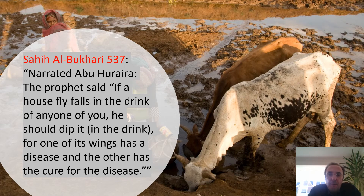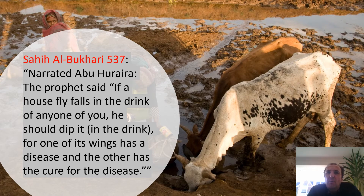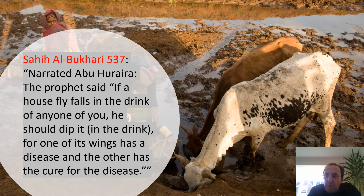In Sunan Ibn Majah 520, Jabir bin Abdullah said: "We came to a pond in which there was a carcass of a donkey, so we refrained from using the water until the messenger of Allah came to us and said, 'Water is not made impure by anything.' Then we drank from it, gave it to our animals to drink, and carried some with us." This is Muhammad's unimpressive knowledge of water sanitation, hygiene, and disease control.